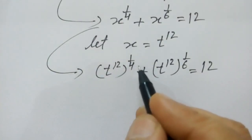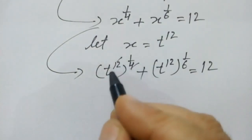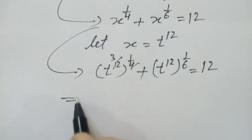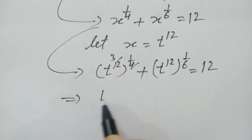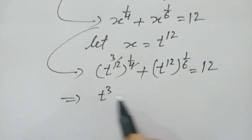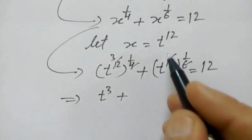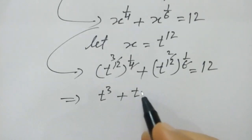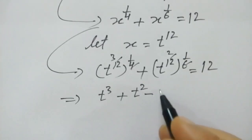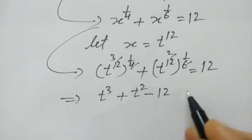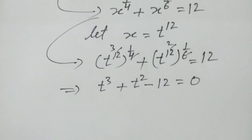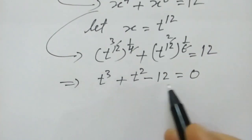Simplifying the exponents — 12 times 1/4 gives 3, and 12 times 1/6 gives 2 — so we get t cubed plus t squared minus 12 is equal to 0.